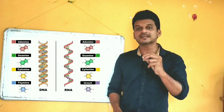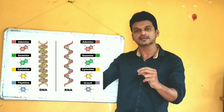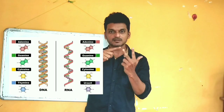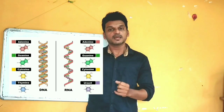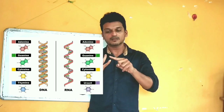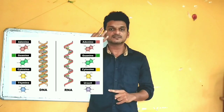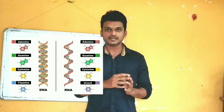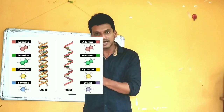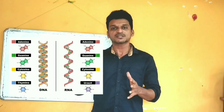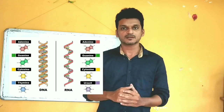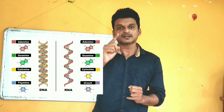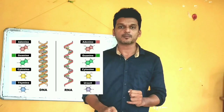Now here comes the key difference between DNA and RNA. In DNA, four nitrogen bases are present: adenine, guanine, cytosine, and thymine. In RNA, adenine, guanine, and cytosine are the same — these three nitrogen bases are common with DNA — but the last nitrogen base in DNA is thymine, while in RNA thymine is not present; instead, uracil is present. All these components come together to make a single nucleotide, and these nucleotides are connected to form a single strand of RNA.